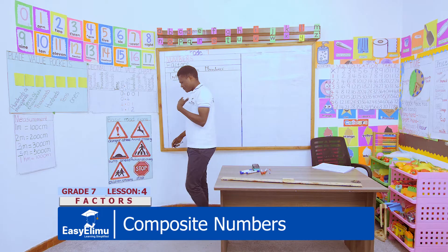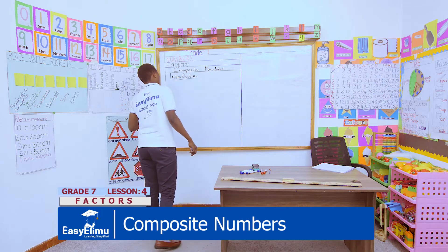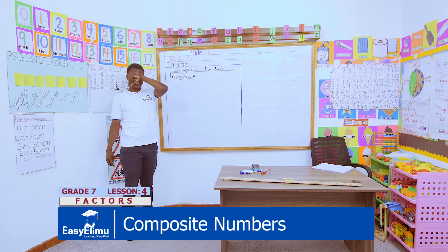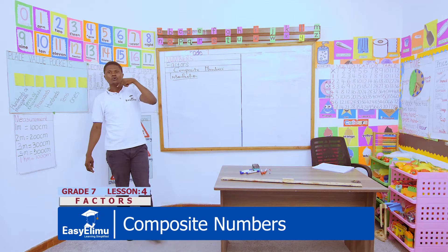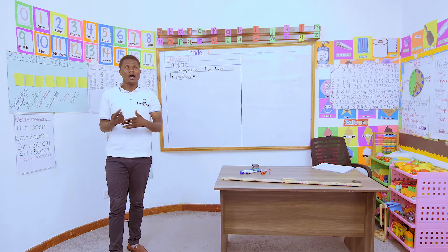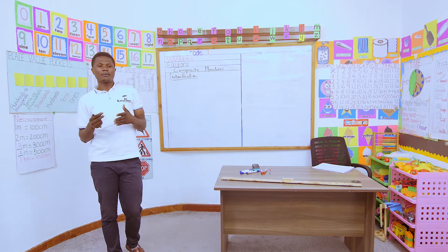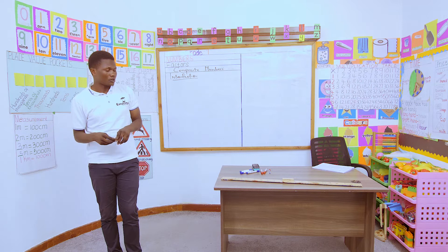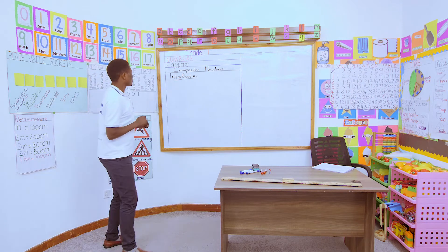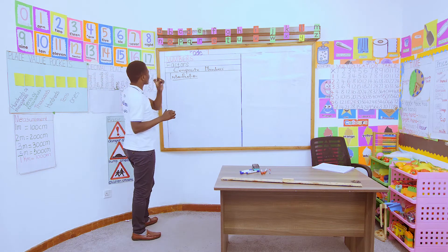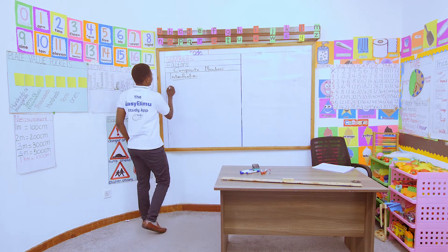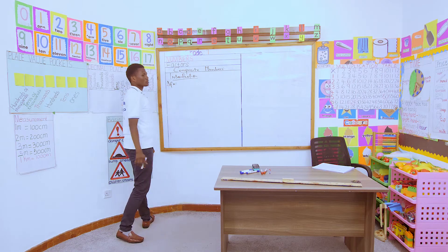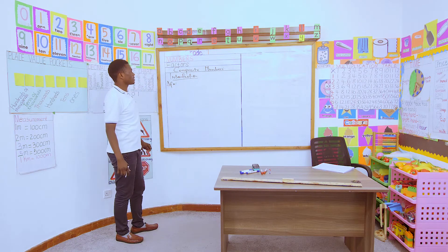Under introduction we shall simply give the definition — the meaning of what composite numbers are — look at the examples, and how to prove that a number is composite. Are we together? Good. So under introduction we are going to write the definition of what a composite number is.